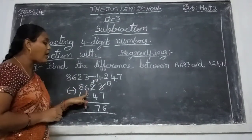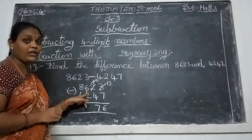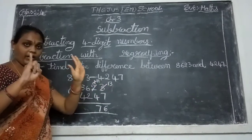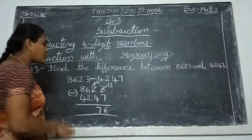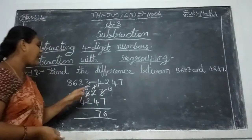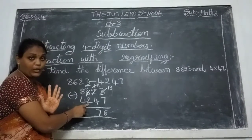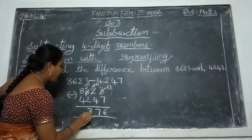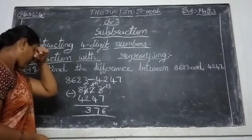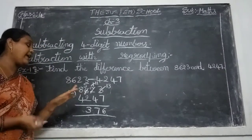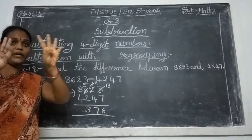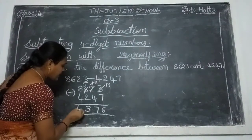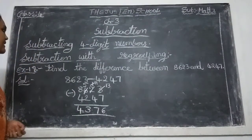The given number is 6, but 6 already gave 1 to the previous column, so remaining is 5. Cross out the 6 and write 5. Take 5 fingers — close 2 fingers. Remaining 3 is there. So write 3. Next, commonly do the subtraction: take 8 fingers, close 4 fingers — one, two, three, four. Remaining fingers are 4. So the answer becomes 4, and 4376 is the final answer.